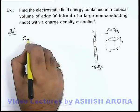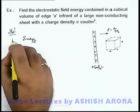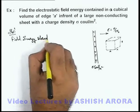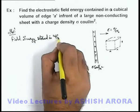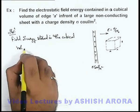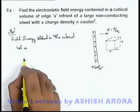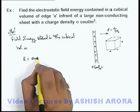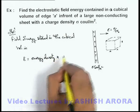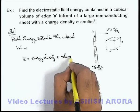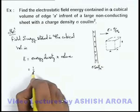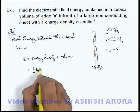And here directly we can say that field energy stored in the cubical volume can be written as energy density multiplied by volume, because in this situation energy density is also uniform because E is uniform. So it can be written as half ε₀ E² multiplied by the volume of this cube which is a³.